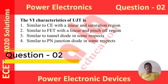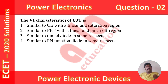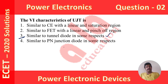The question is: the VI characteristics of UJT (unijunction transistor) is similar to? The unijunction transistor has a negative resistance region in it, so the characteristics of this UJT are similar to that of a tunnel diode — but not all characteristics, only in some respects. So the answer is: similar to tunnel diode in some respects, and option 3 is the correct option.